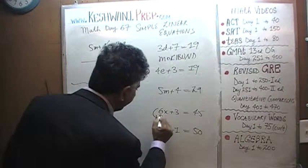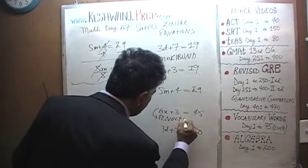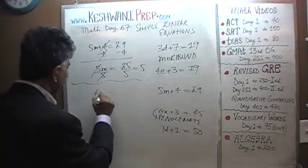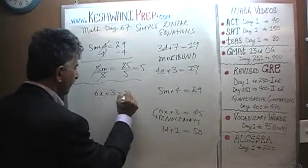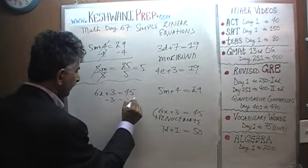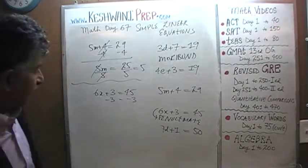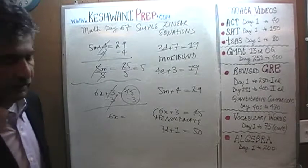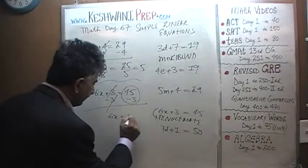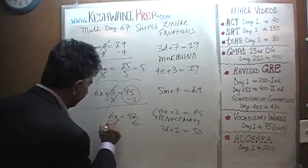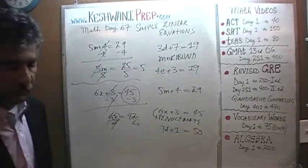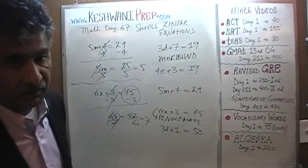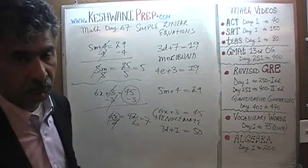Let's do the penultimate one: 6x plus 3 equals 45. Subtract 3 from both sides of the equation — 3 gets knocked out, 6x comes down. 45 minus 3 is 42. Divide both sides by 6 — 6 gets knocked out and x equals 42 divided by 6, which is 7.